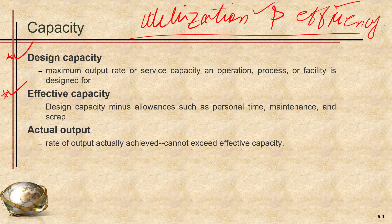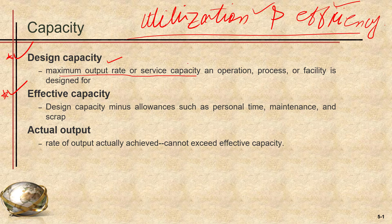So what is the design capacity? That is basically the maximum throughput rate, or flow rate, or output rate of a particular process, operation, or facility. To calculate that, we first need to identify the bottleneck of the operation. Whatever the capacity of that bottleneck operation, that would be considered as the maximum output rate of that particular operation or process.